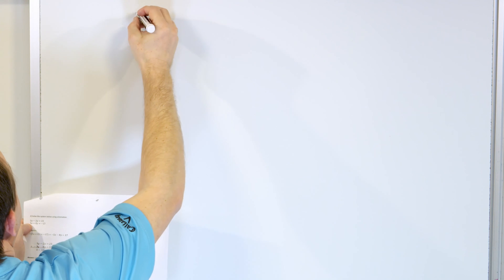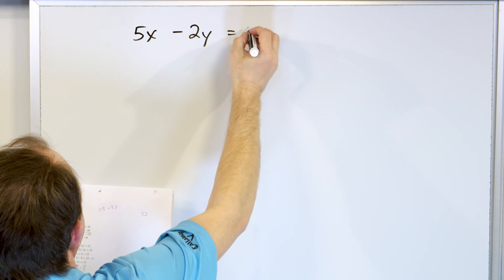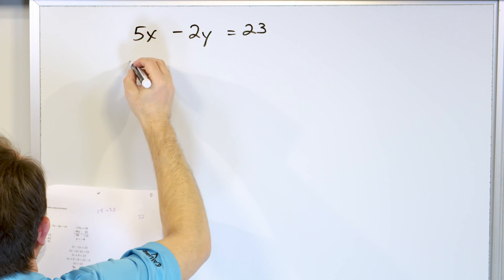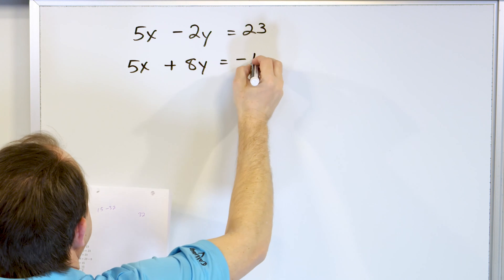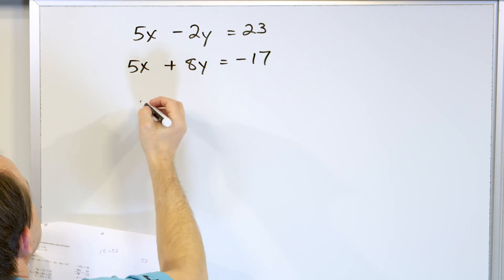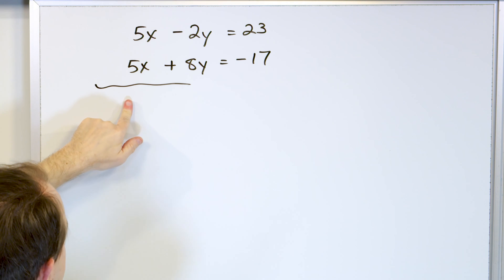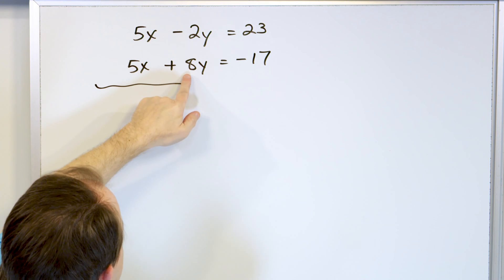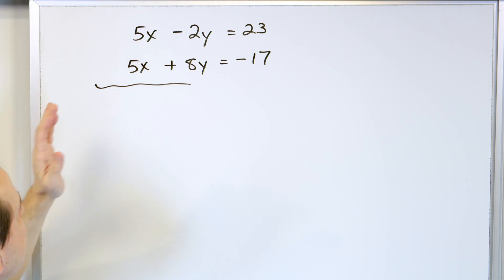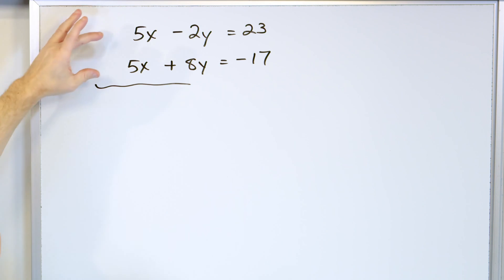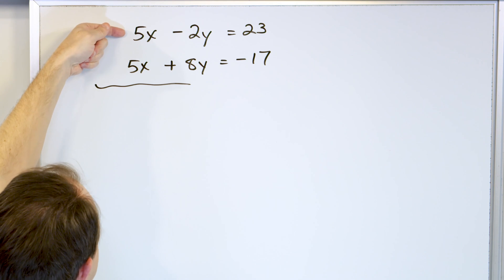Both will yield the correct answer. Let's take a look at the next problem. 5 times x minus 2 times y is equal to 23, followed by 5 times x plus 8 times y is equal to negative 17. So what am I going to do right here? If I add these straight away, 5 plus 5 is 10x, and then this will give me 6y, and nothing's going to cancel.